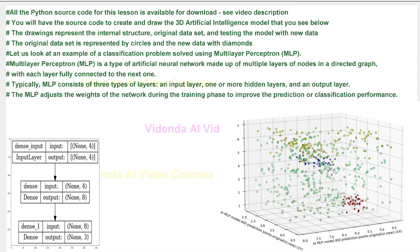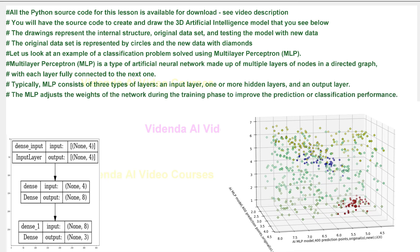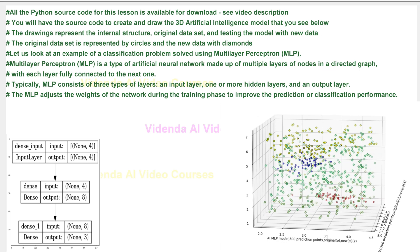Typically, MLP consists of three types of layers: an input layer, one or more hidden layers, and an output layer.